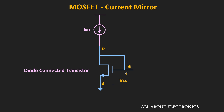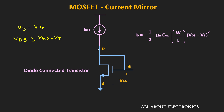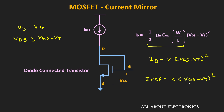In a diode-connected transistor, the drain and the gate terminals are connected together, meaning the voltage VD is equal to VG. So here, the voltage VDS is always greater than or equal to VGS minus VT, which means this MOSFET always operates in the saturation region. Therefore, the drain current ID can be given by this expression. Letting the device parameters equal K, the drain current ID equals K times (VGS minus VT) squared. Since ID equals I_reference, we get VGS equal to the square root of I_reference divided by K, plus VT.